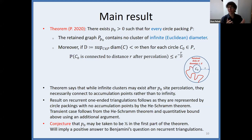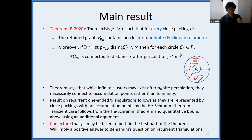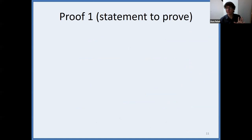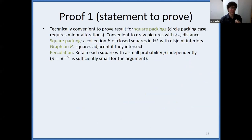Much of this talk involves conjectures; the proof itself is not that hard. The next slides present the proof of the main result — the circle packing percolation result. I will work not with circle packings but with square packings, as it is technically convenient. It's really the same: there is a corresponding He-Schramm theorem for squares, and the proof works for both.